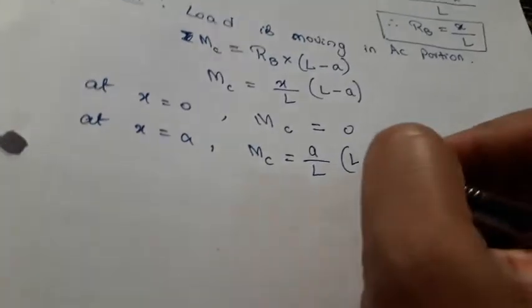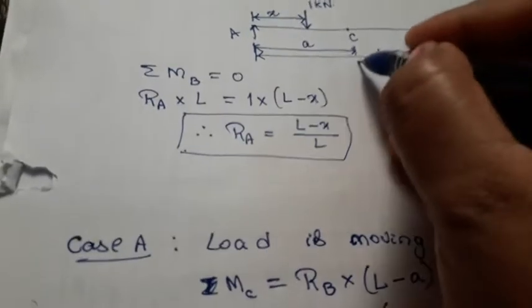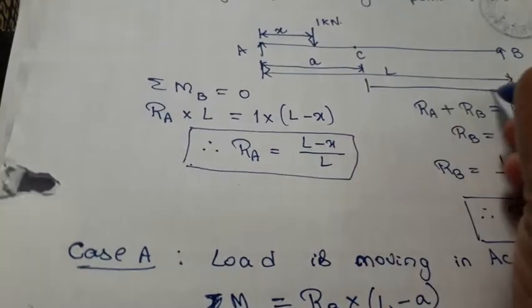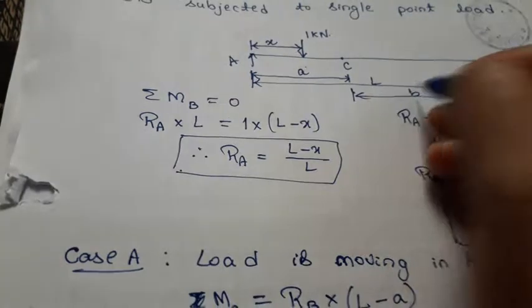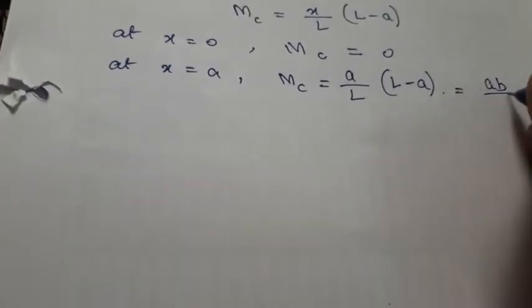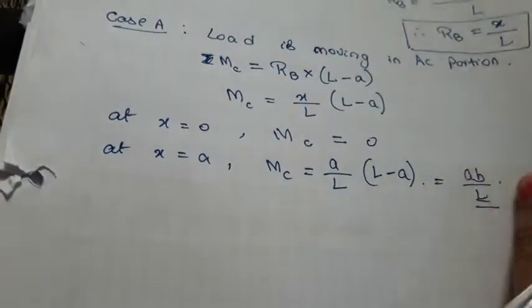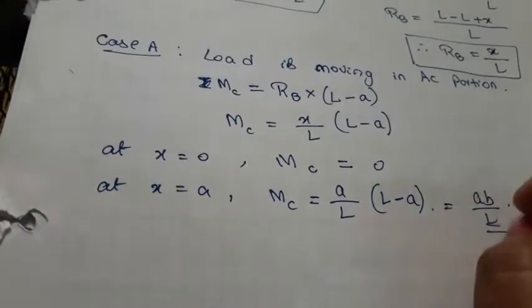At X = A, MC = (A/L) × (L − A). If we call the remaining portion CB as B, then L − A = B. So MC = AB/L. This is the result for Case 1 — when the load is in the AC portion, the maximum ordinate at C is AB/L.